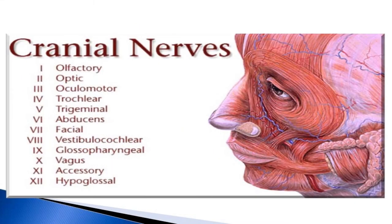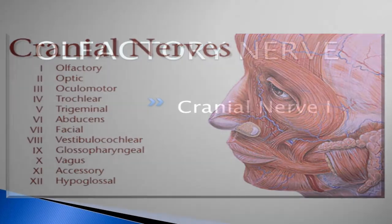Cranial nerves list: 1st is olfactory, 2nd is optic, 3rd is oculomotor, 4th is trochlear, 5th is trigeminal, 6th is abducens, 7th is facial, 8th is vestibulocochlear, 9th is glossopharyngeal, 10th is vagus, 11th is accessory, and 12th is hypoglossal.